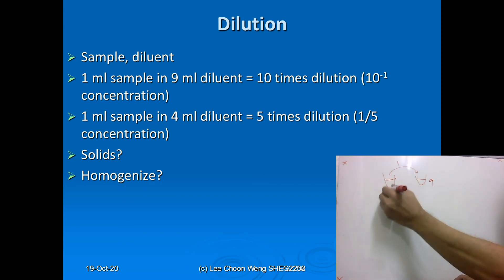Sometimes, especially when you are working in the food industry, you get solid samples - for example, butter, peanut butter, biscuits, ice cream. So how do you carry out dilution?